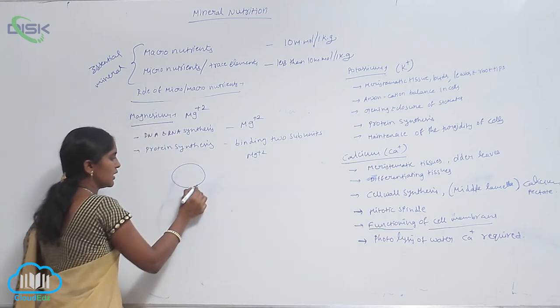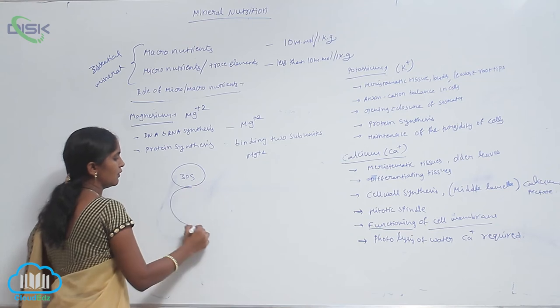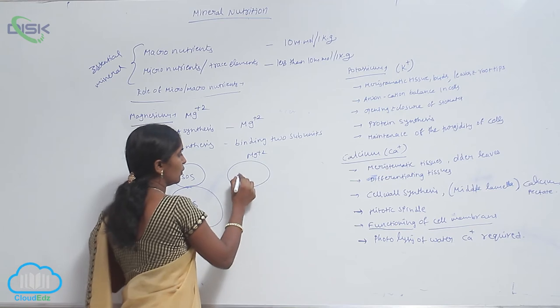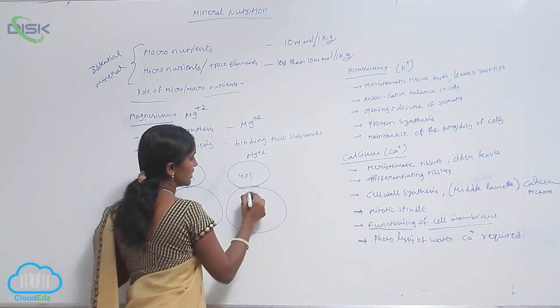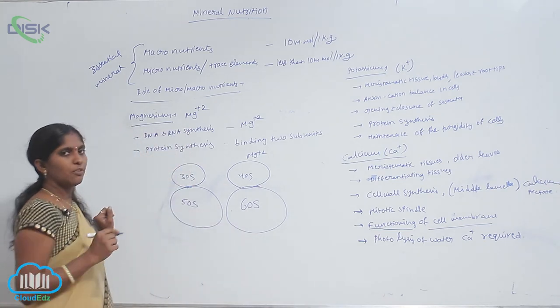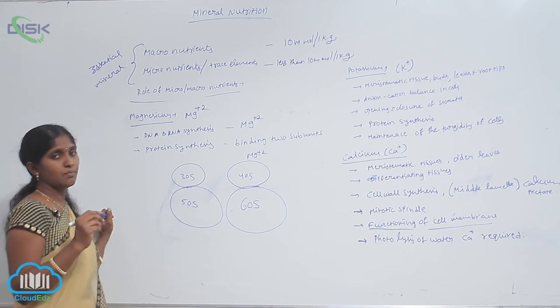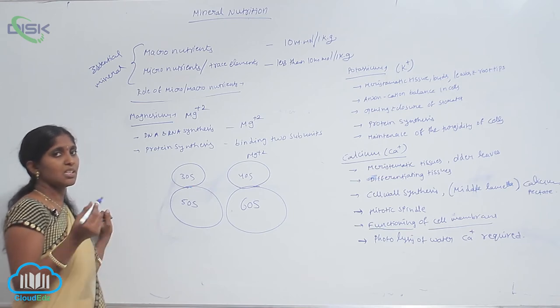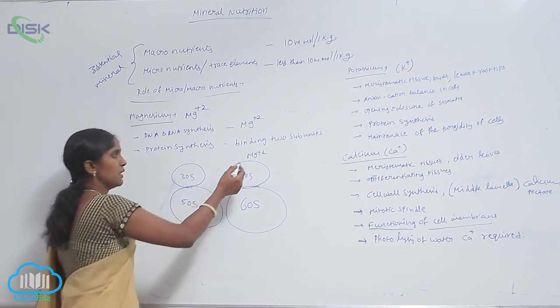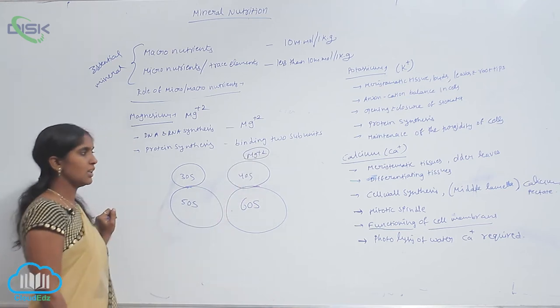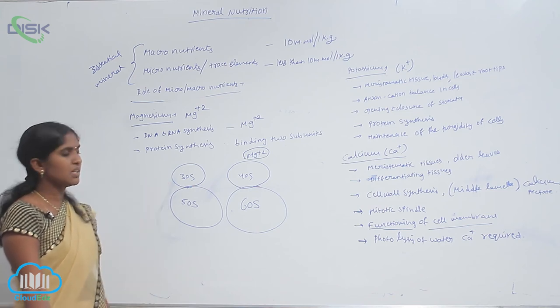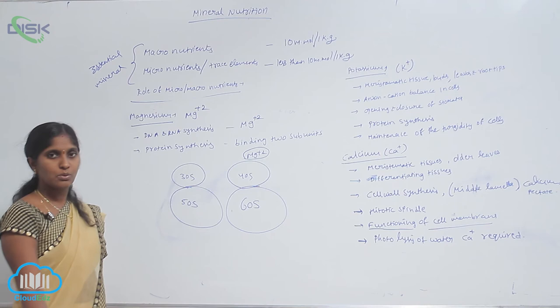What are the subunits? 30S and 50S subunit in prokaryotes, 40S and 60S large subunit. Basically they are separate forms present in cytoplasm. While protein synthesis is initiated, then the Mg+ ion acts as a binding for these two subunits. It means that these two subunits are bound with the Mg+2 ions only.